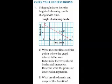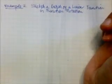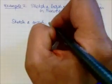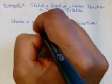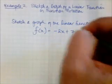Here's an opportunity for you to try a similar question on your own — pause the video. Let's move on to example number two: you should be able to sketch a graph of a linear function in function notation. The function is f(x) equals negative two x plus seven.